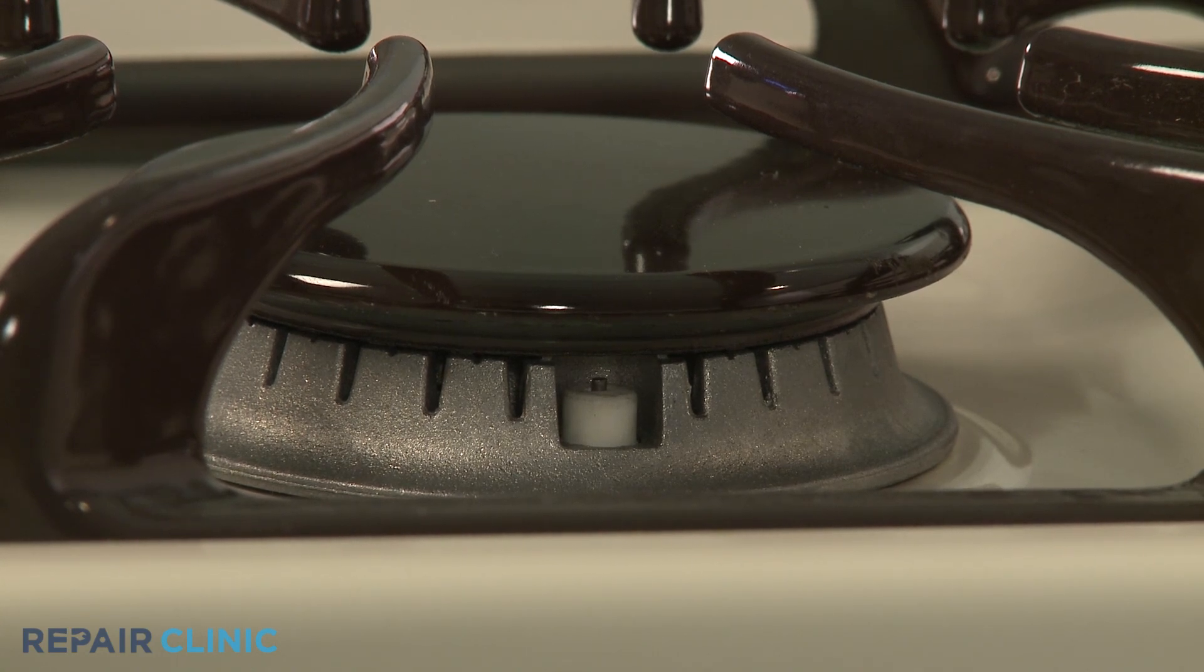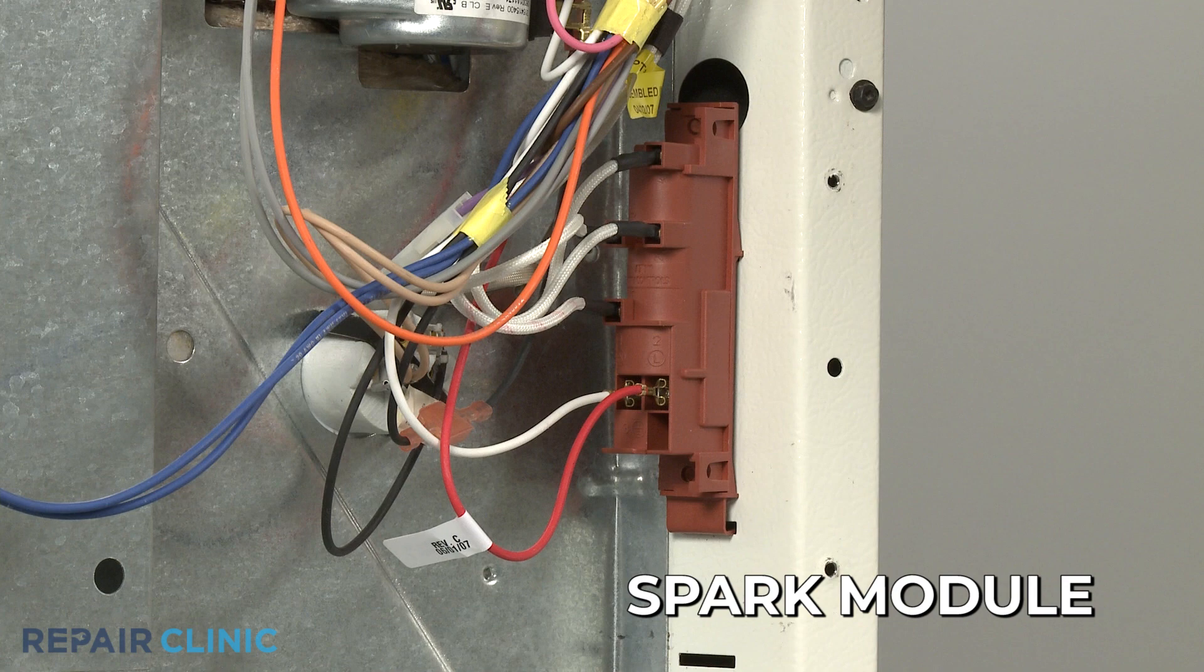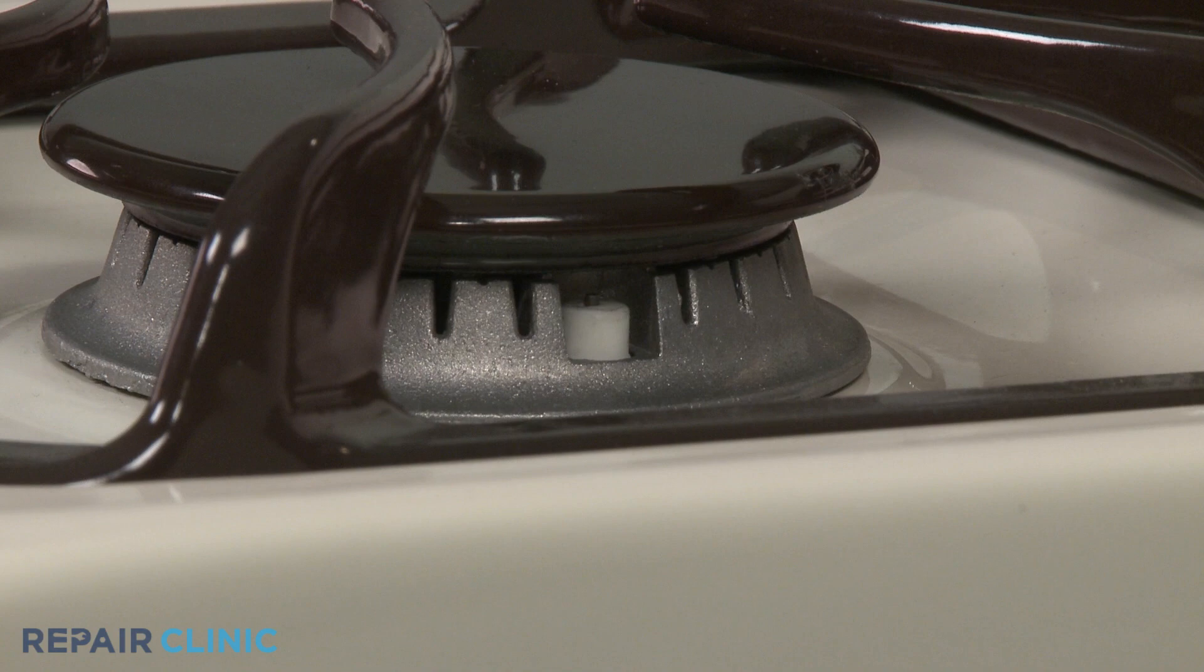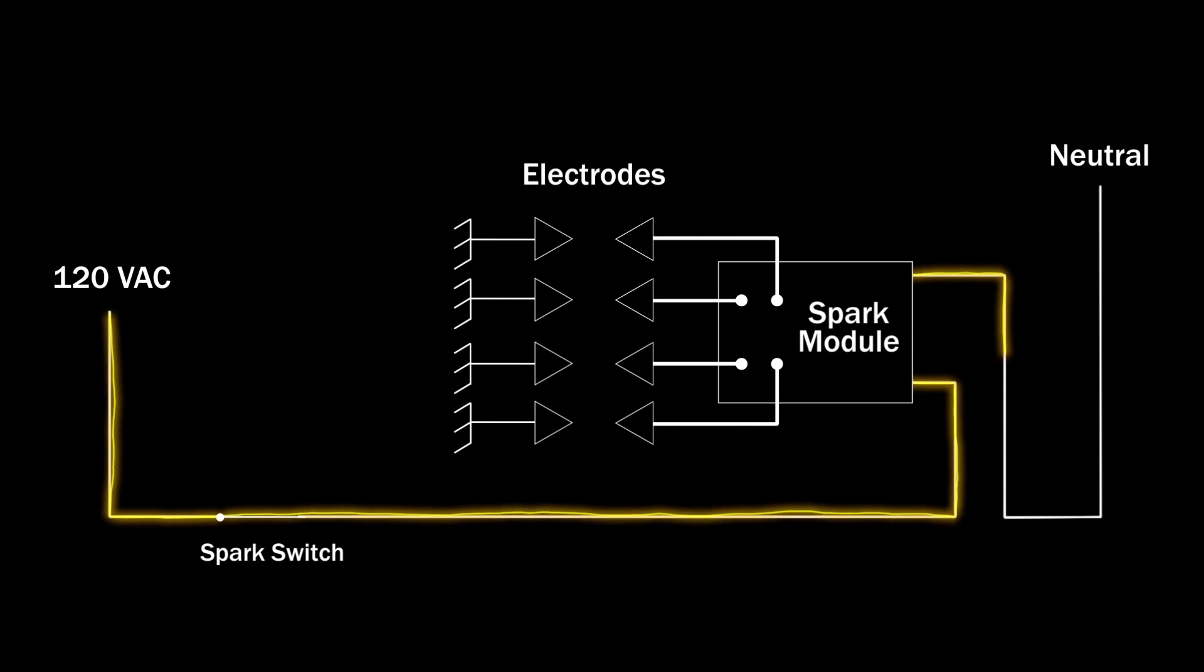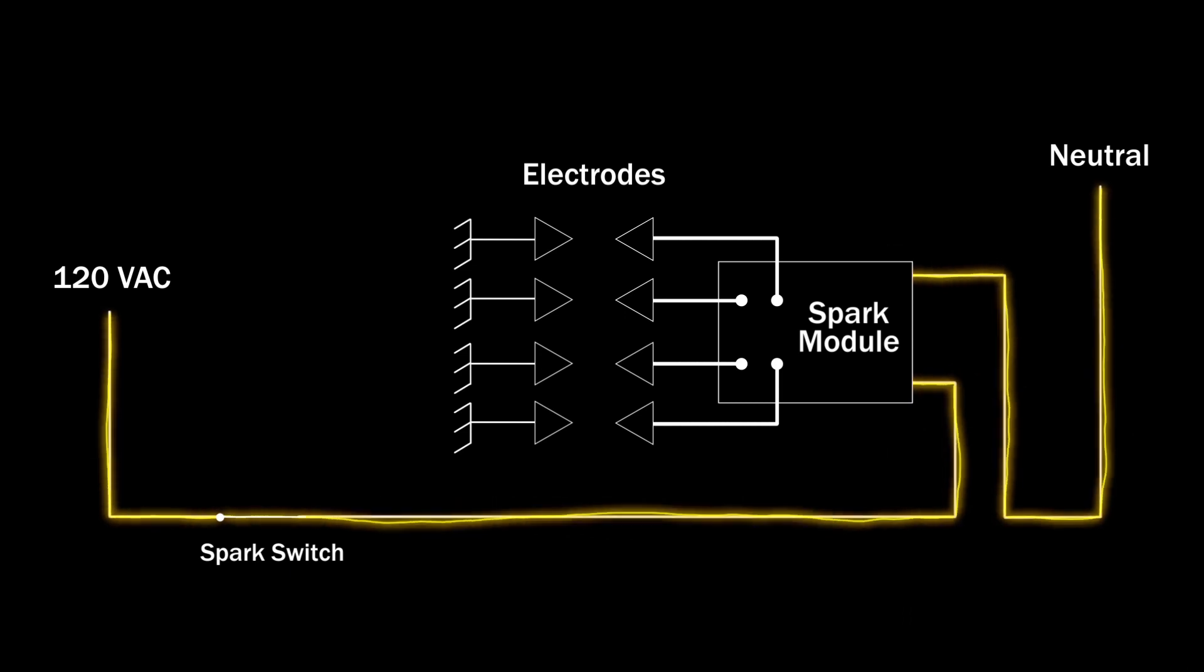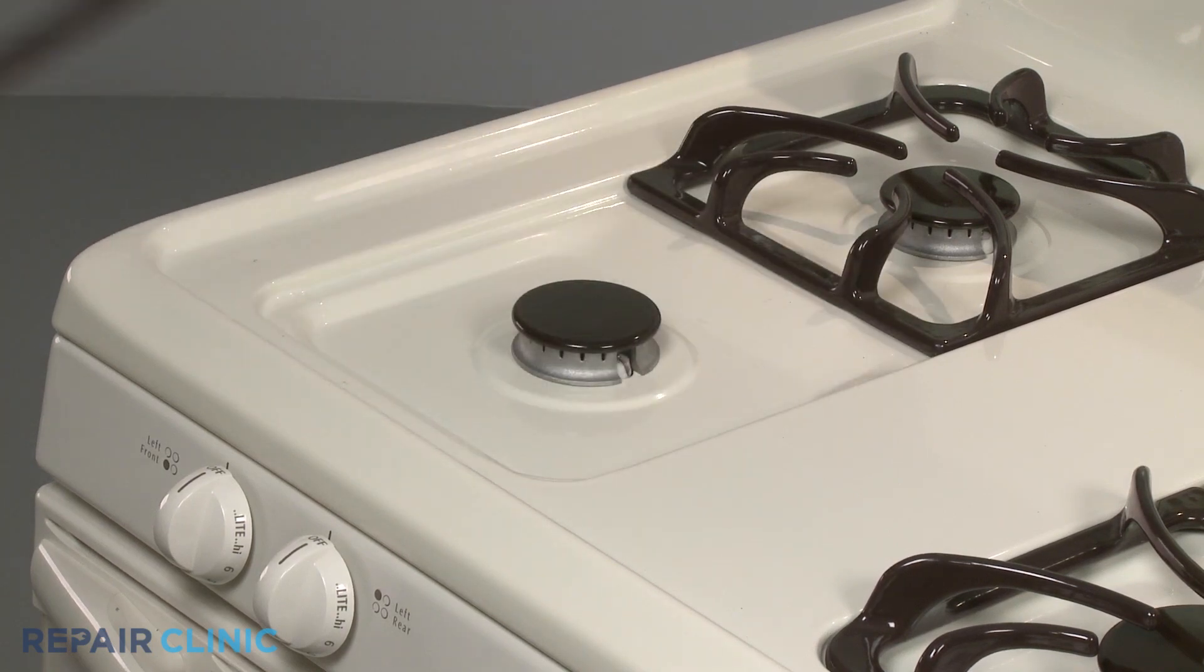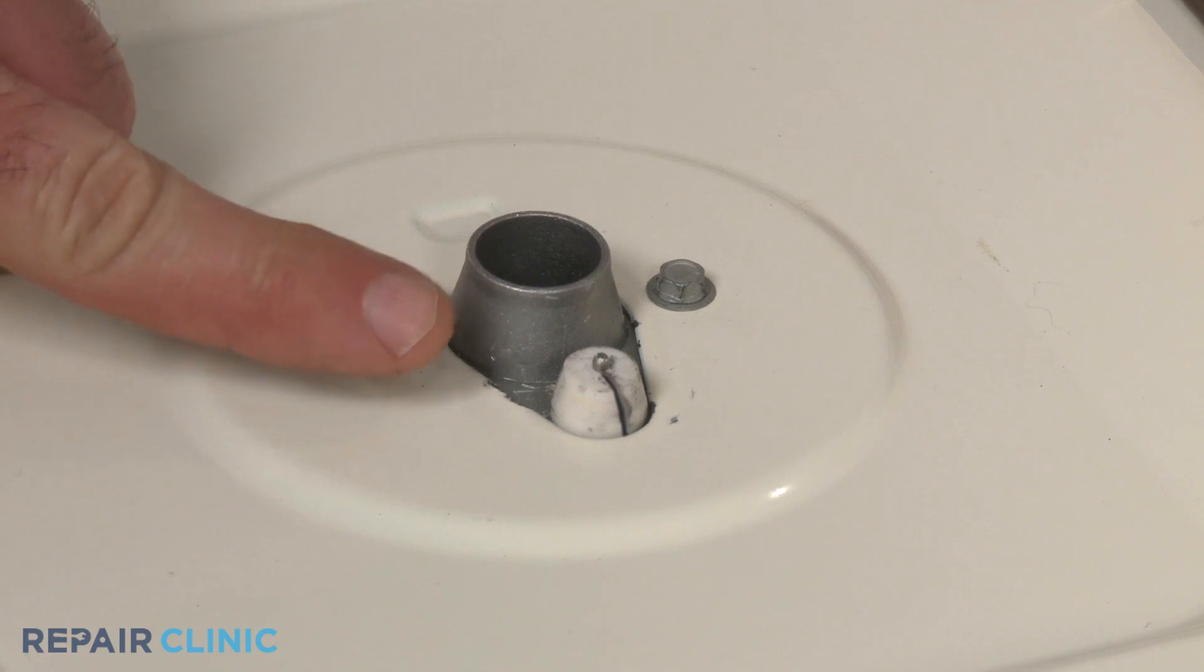If the electrodes spark intermittently, there is a high probability that the module is defective and will need to be replaced. If one or more of the electrodes fails to spark at all, the cause could be a defective switch that prevents the voltage from reaching the module. The module could also be defective and fail to produce the high voltage pulses to one or more of the electrodes. Finally, the electrodes themselves could be damaged. To help determine this, you can inspect the electrodes for cracks.